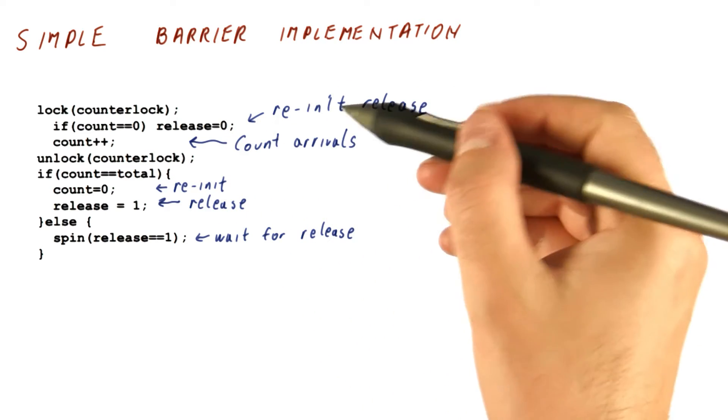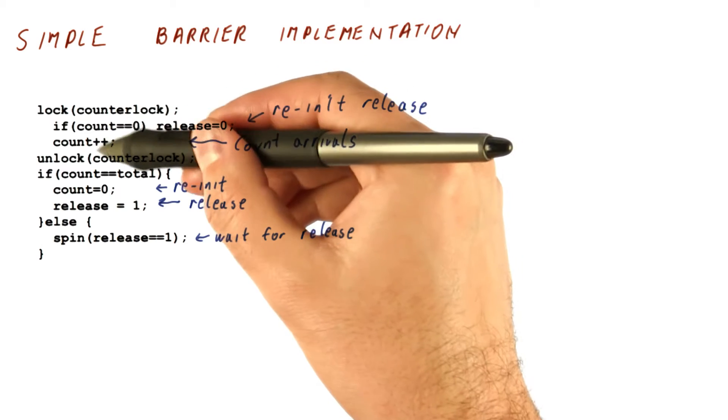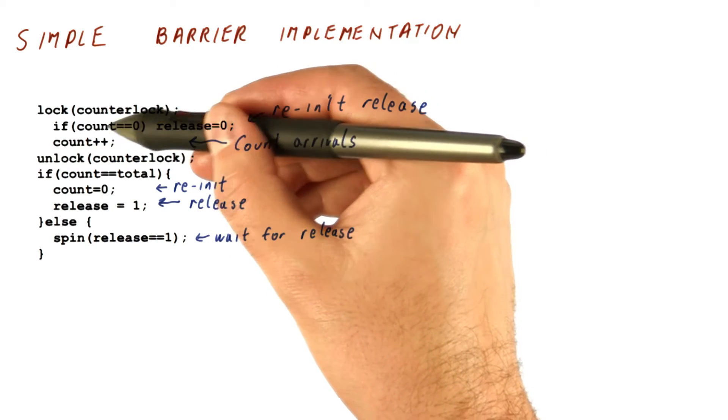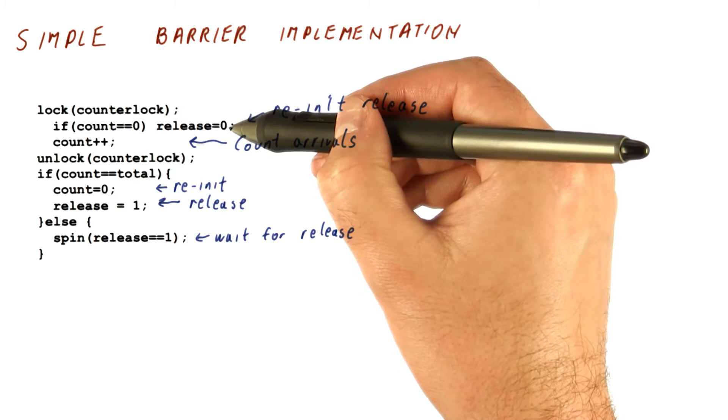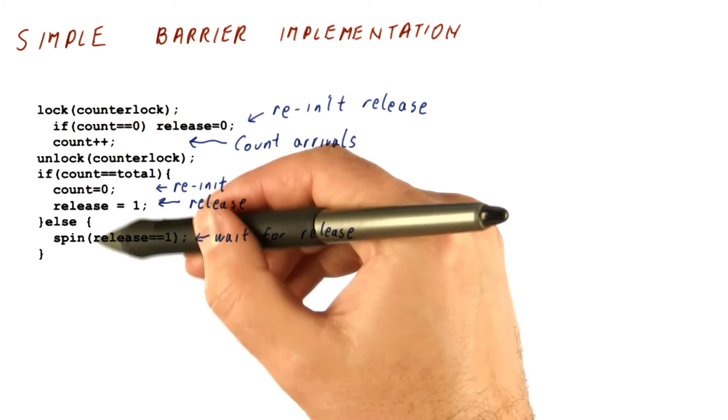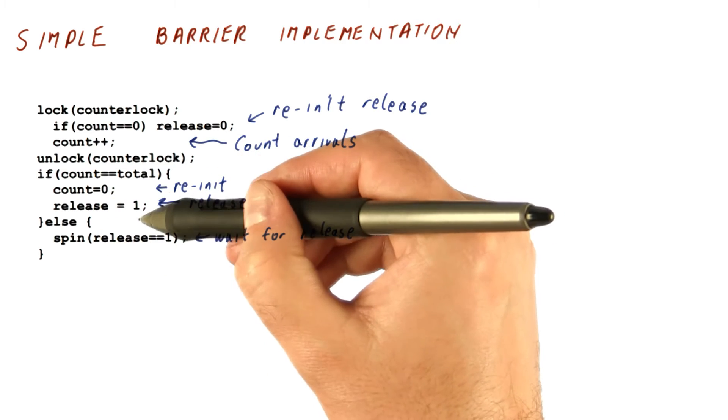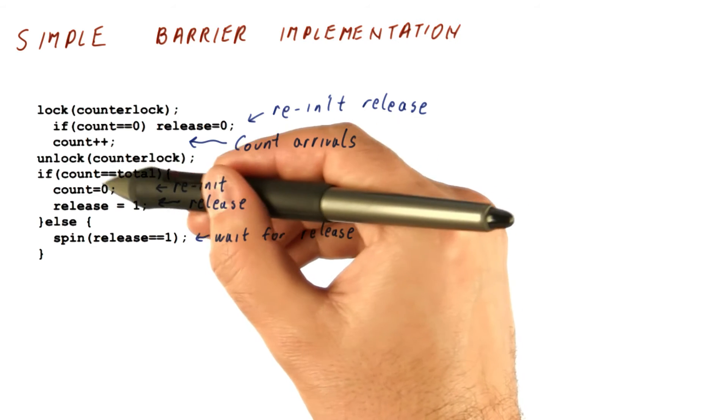So the idea is now that as we enter the barrier, the first thread that arrives, and note that this is done in a critical section, so exactly one thread will see this as zero, it sets release to zero. That thread then increments the count, it becomes one, and then goes on here. That thread and all the other threads now see release as zero, and the only way it becomes one is if count reaches the total.